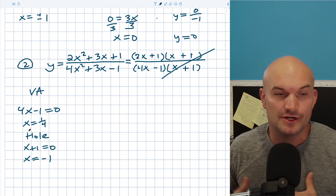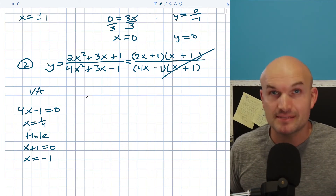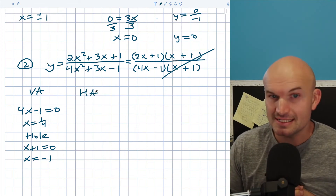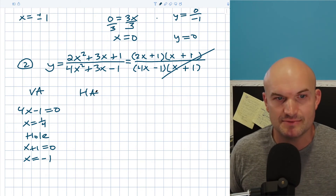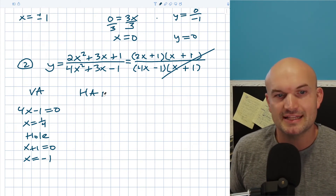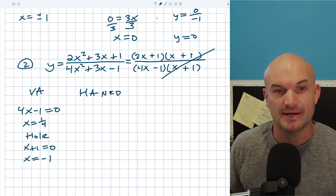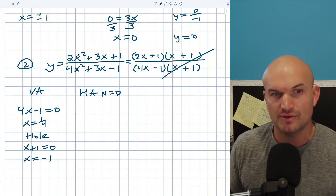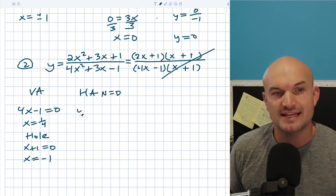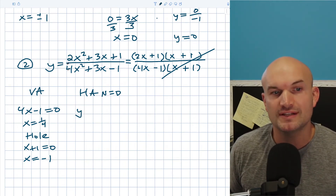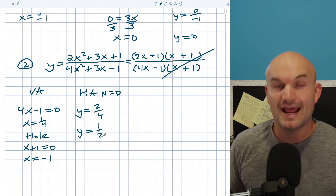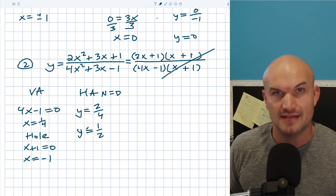If you needed to graph this or determine the domain, identifying the hole is very important. For the horizontal asymptote, recognize that the degree of the numerator equals the degree of the denominator — both are x squared. When the degrees are equal, we take the leading coefficient of the numerator over the leading coefficient of the denominator: 2 over 4 simplifies to 1/2. So y equals 1/2 is the horizontal asymptote.